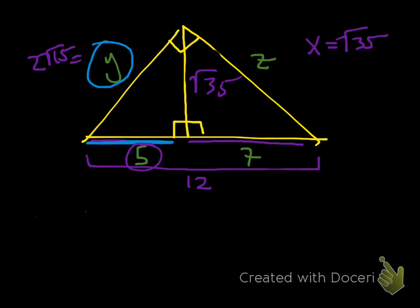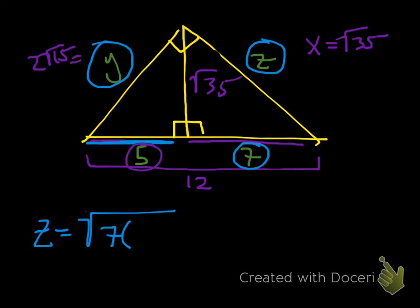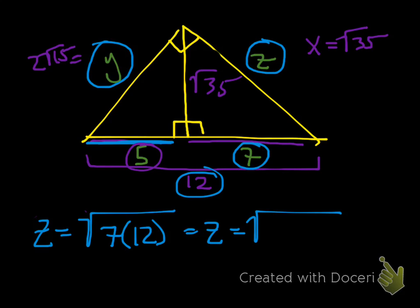Now solving for Z using the same leg theorem: Z equals the geometric mean of the adjacent leg, which is 7, times the entire hypotenuse, which is 12. So Z equals the square root of 84.